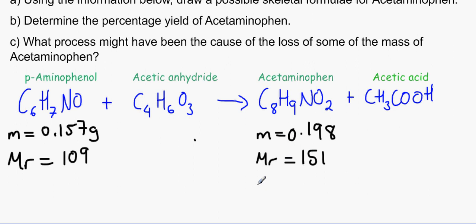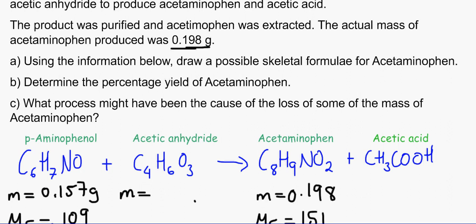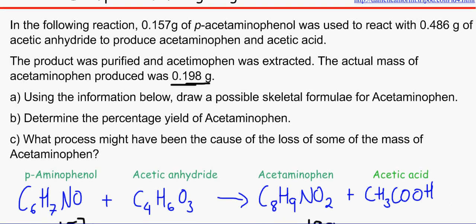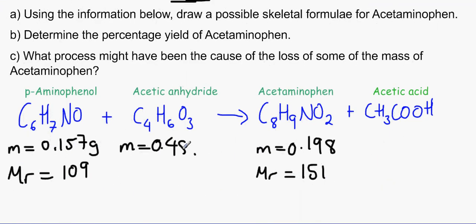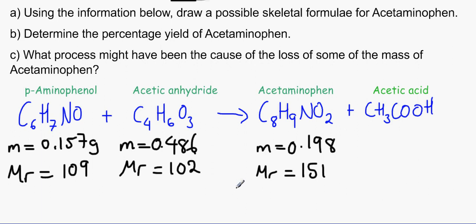All right, so we have got these two pieces of information. So let's do acetic anhydride now. So it would be 0.486 and the MR will be 102.